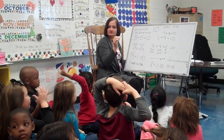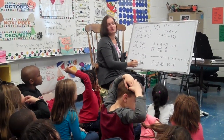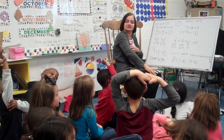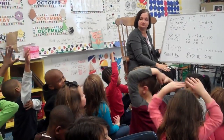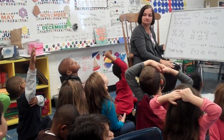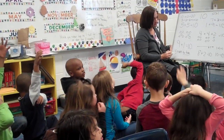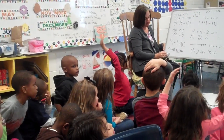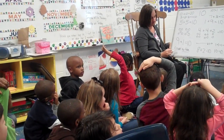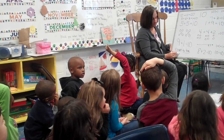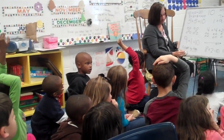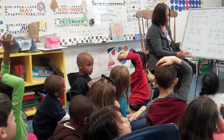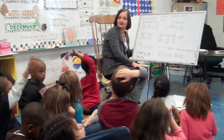Tyler? How about our tally marks — how can we show 10 with tally marks? Tell me how to do the tally marks for 10. 1, 2, 3, 4, cross — 6, 7, 8, 9, 10. Very good, very good, very good.